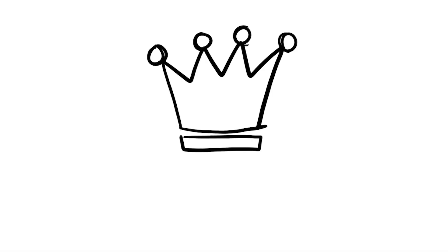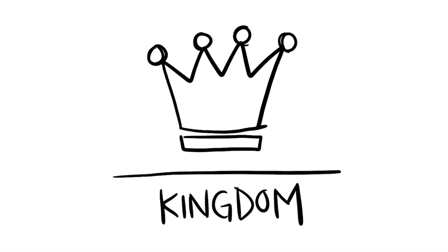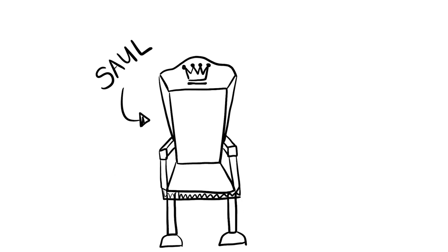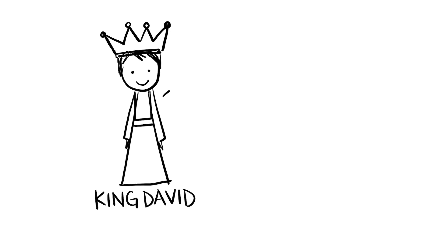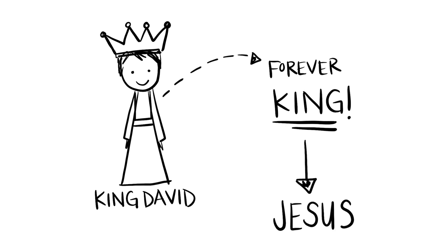Finally we have the kingdom era where the Israelites asked God for a king just like all the nations around them. We see rulers take the throne like Saul, David, Solomon, and more. In this era, God continues his promise to Abraham by making another very important promise, but this time to King David. God told King David that someone from his family would be king forever and ever. This forever king that would come from David's family is Jesus.